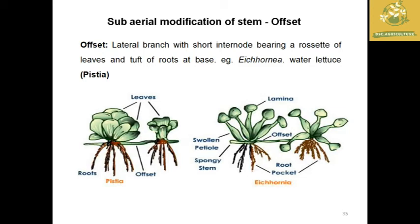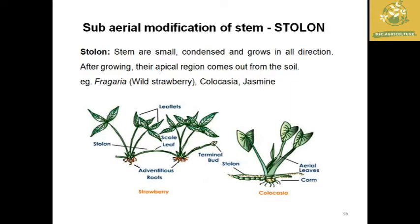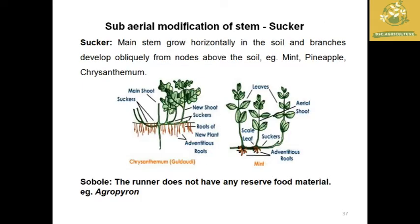Offsets form lateral branches with short internodes producing a leaf tuft with roots at the base; examples: water lettuce and Eichhornia. Stolons are stems with condensed growth that travel in all directions, with the apical region emerging from the soil to produce a new plant; example: strawberry and Colocasia.